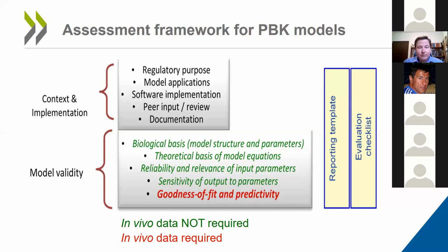The guidance document talks about characterization and validation. When we talk about characterization, these are the characteristics linked to the validity of the model — intrinsic characteristics strictly linked to the validation process, of which there are five. In addition, we have extrinsic characteristics more to do with the context of use and implementation of the model, which also influences the level of confidence. Importantly, four of the five characteristics for establishing model validity can be assessed without any reference to in vivo toxicokinetic data. Only one set of considerations — goodness of fit and predictivity — would require some in vivo toxicokinetic data, either for the chemical of interest or for an analogue via the read-across approach.